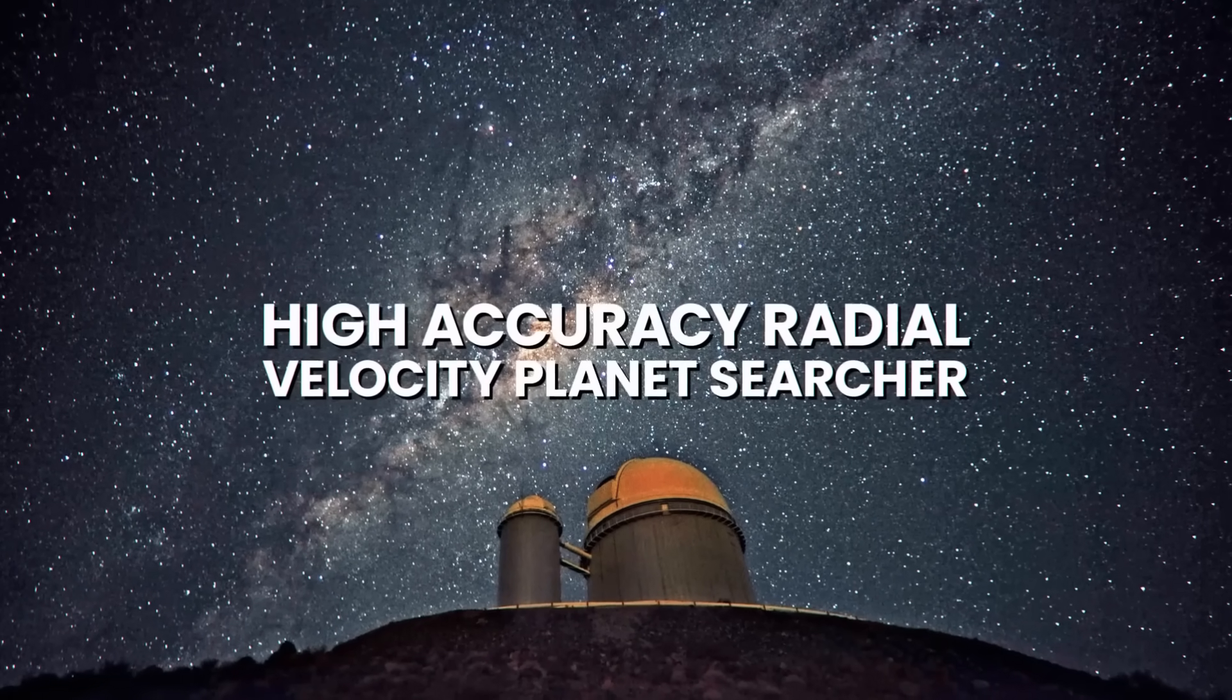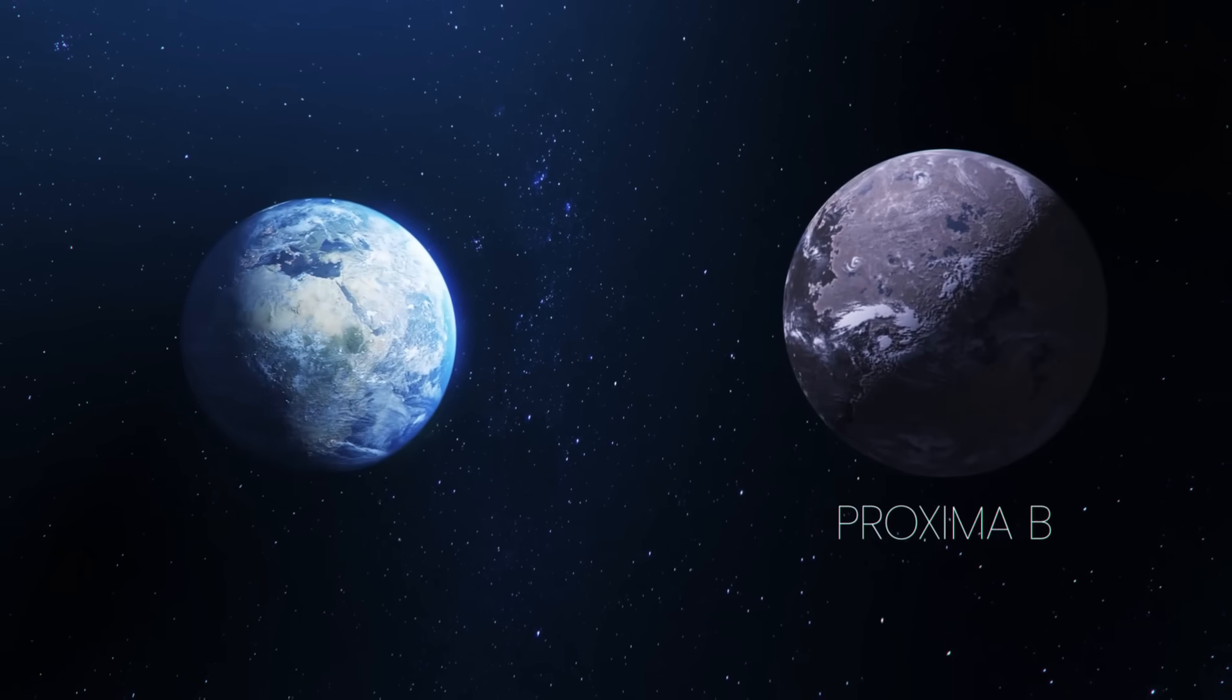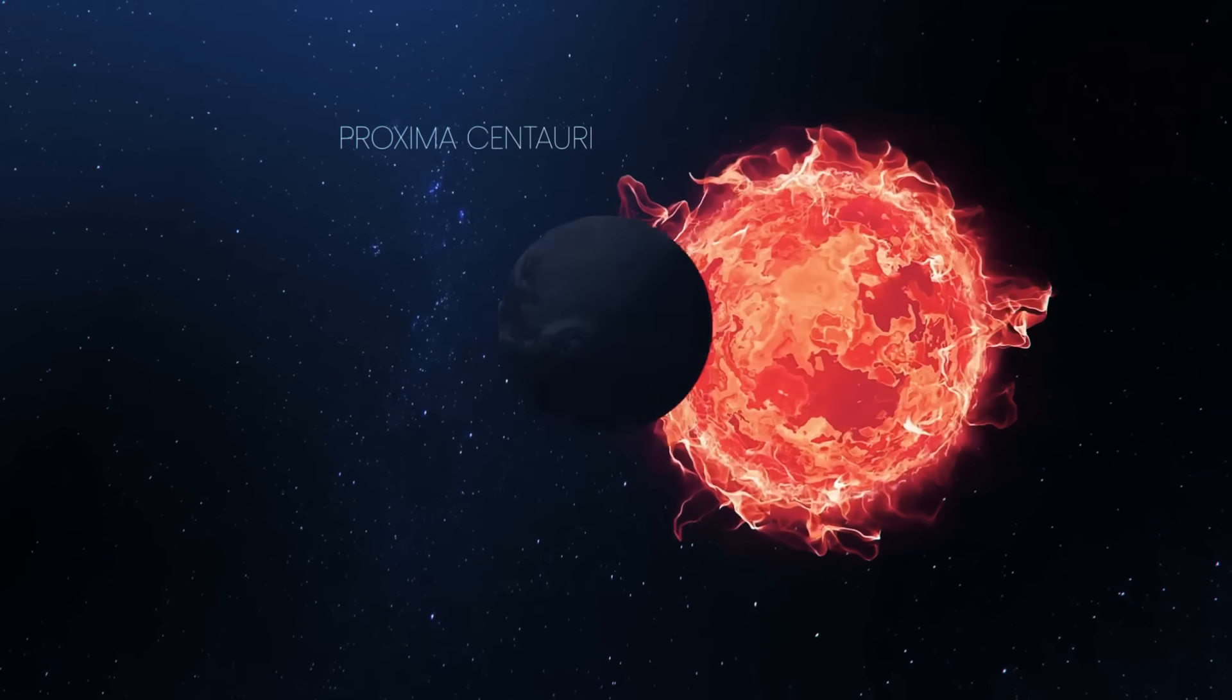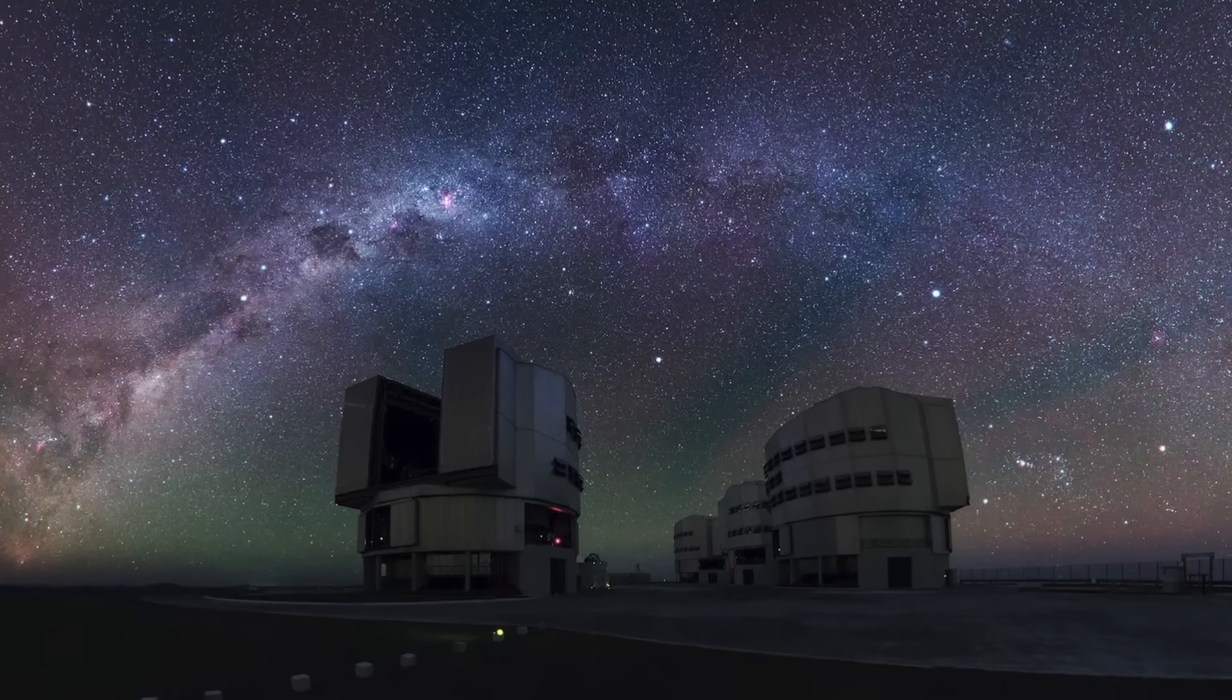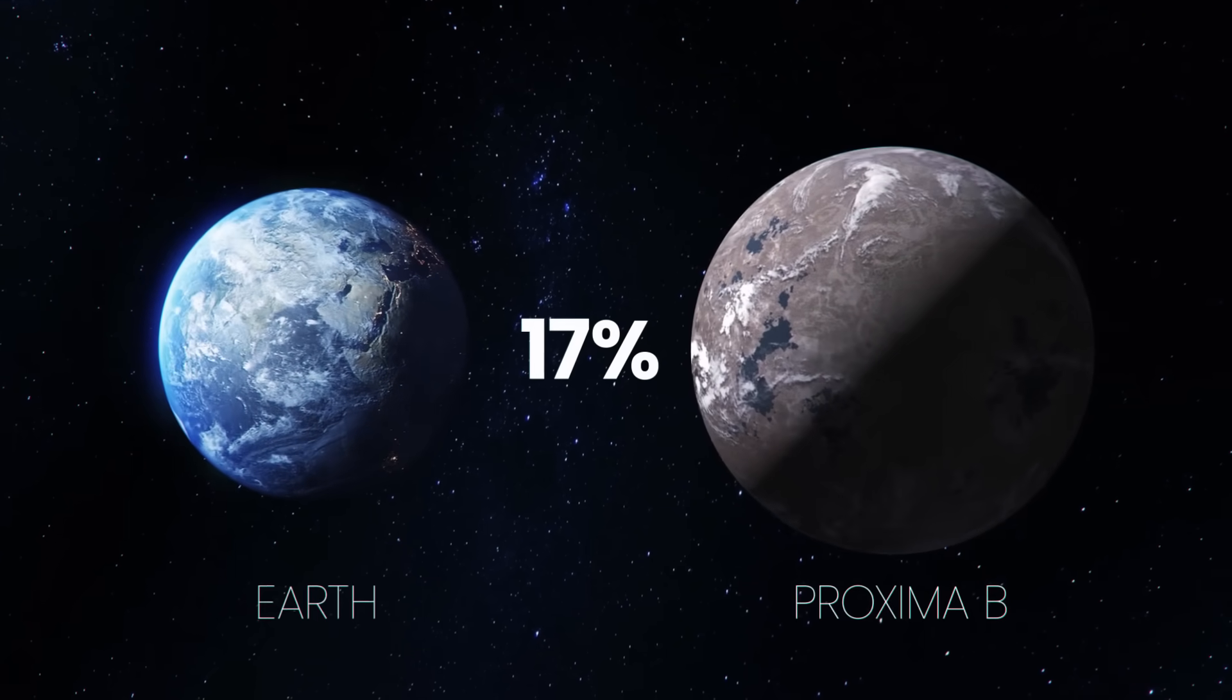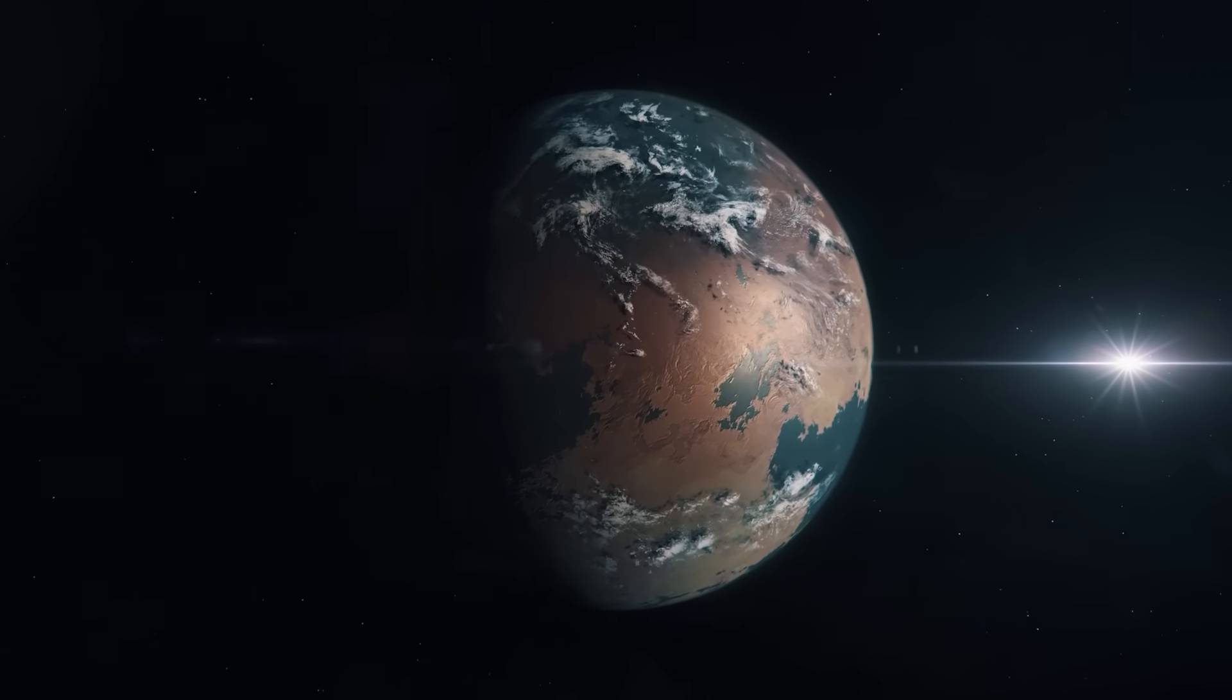First detected by the Harps telescope in 2016, Proxima b is the closest alien exoplanet to our solar system at 4.2 light-years from Earth. It lies in the habitable zone of its red dwarf star, Proxima Centauri, and was thought to be a minimum 1.3 Earth masses. But a new telescope named Espresso recently discovered Proxima b to be only 17% more massive than our planet, making it more Earth-like than it previously been thought, and a candidate for life, because it's the right distance from its host star to have liquid water.